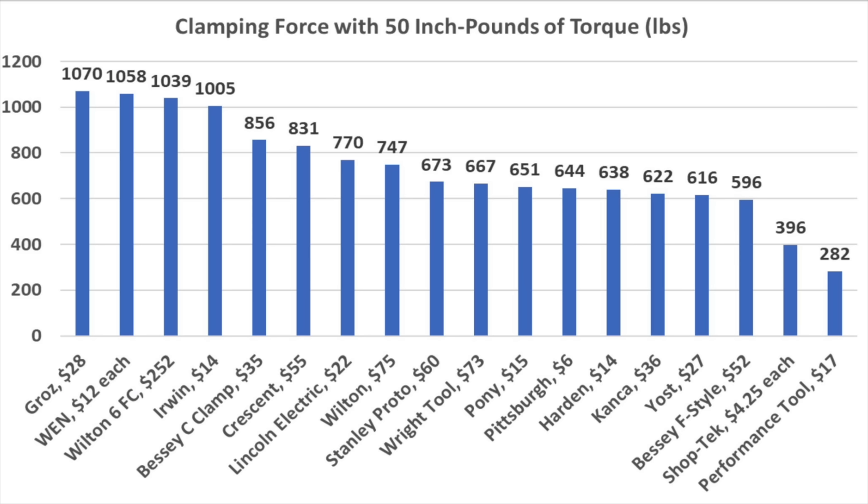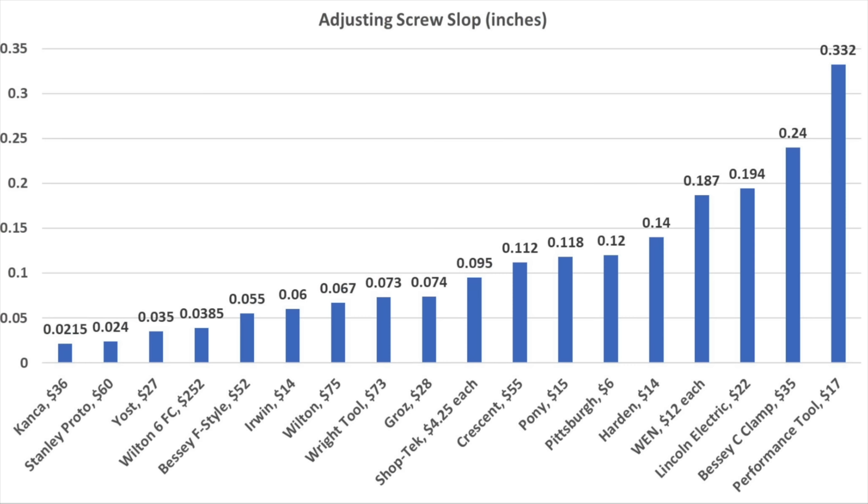Applying an equal amount of leverage to all the C-clamps, the best performing brands delivered over a thousand pounds of clamping force. The Shoptek ran out of steam at 396 pounds and Performance Tool at 282 pounds. So for now, the Shoptek is actually outperforming the Performance Tool. The Performance Tool also finished in last place for adjusting screw slop, but the competition is not over.